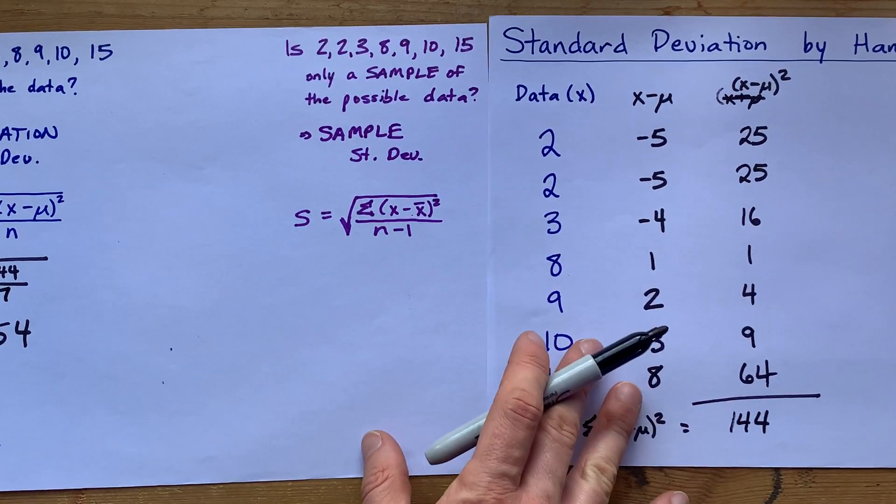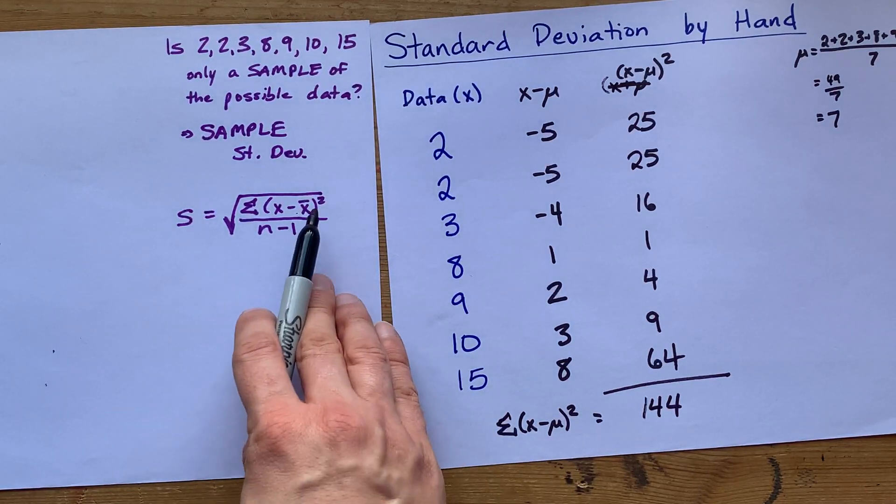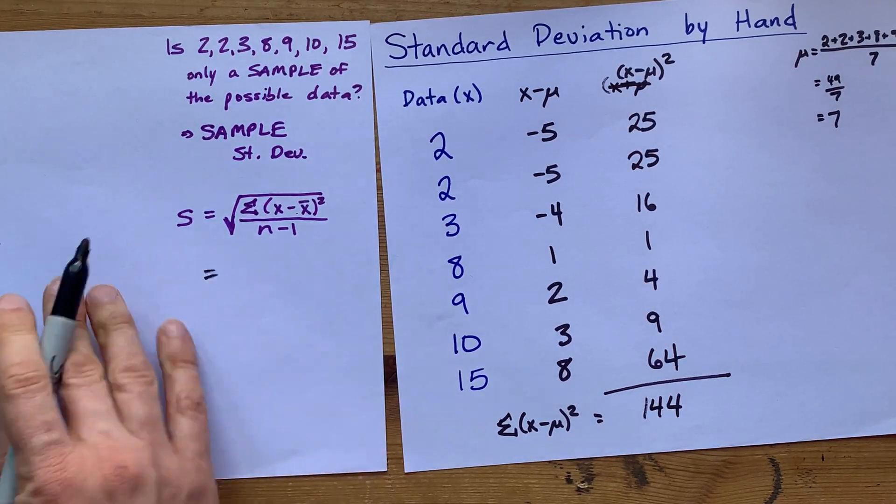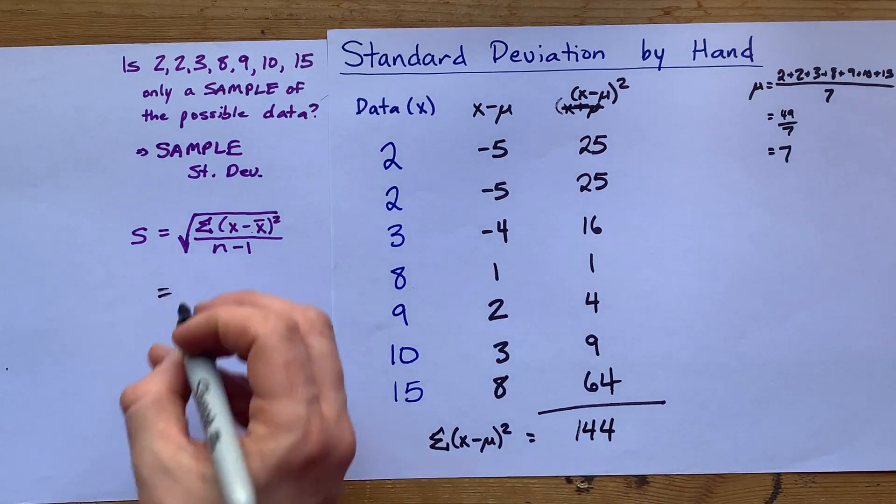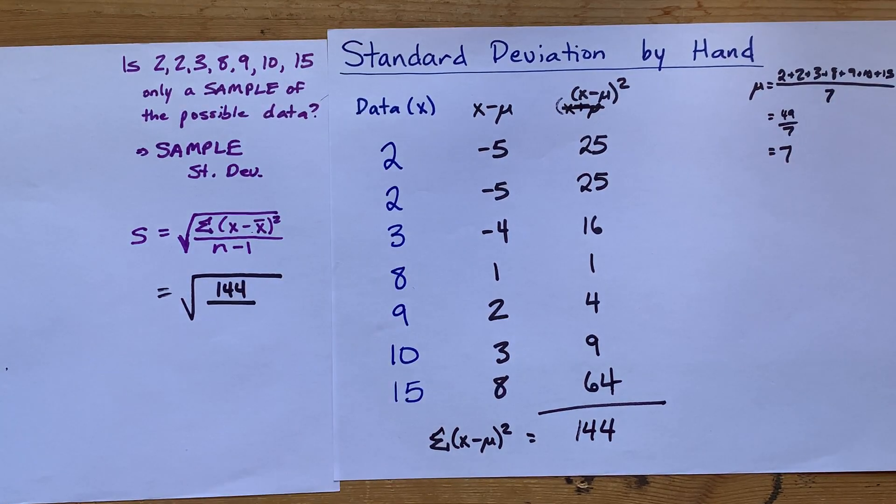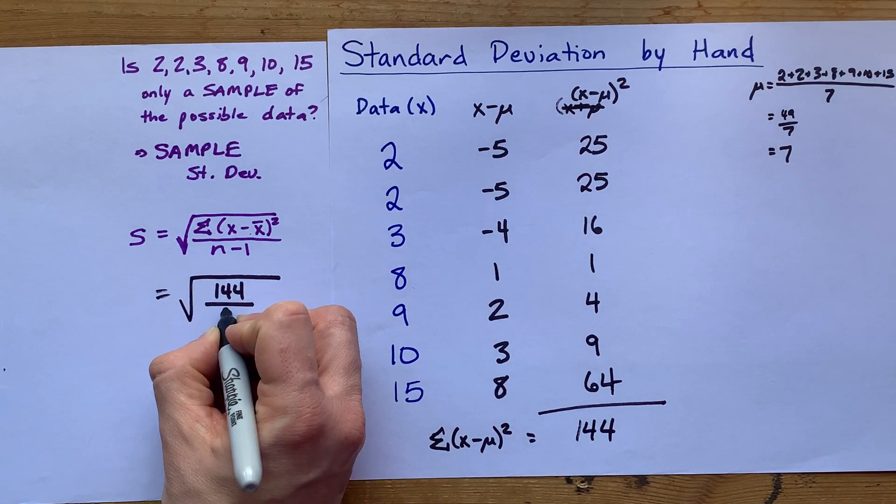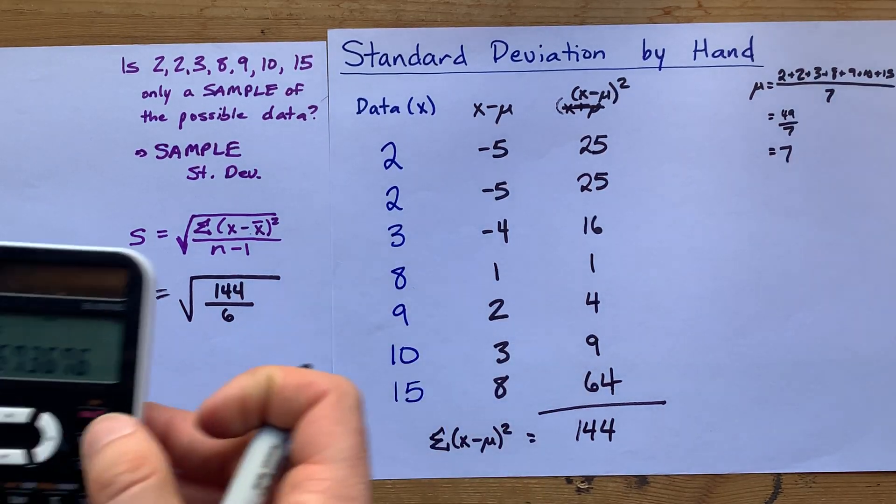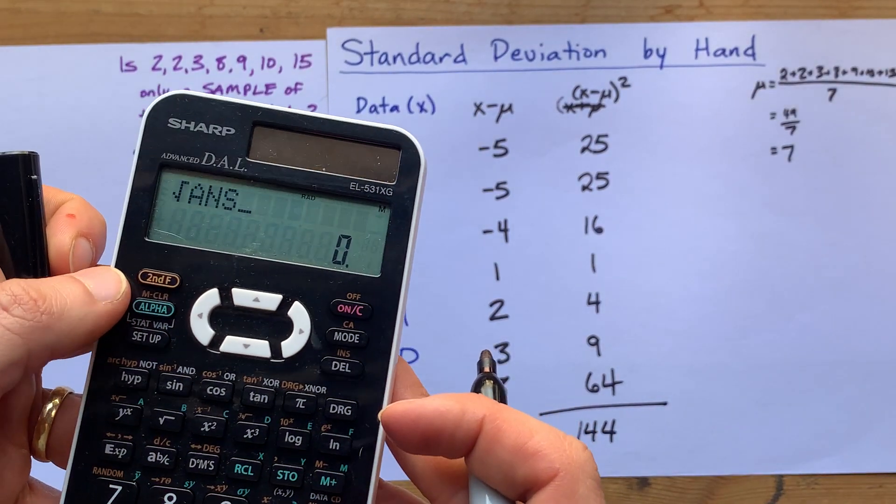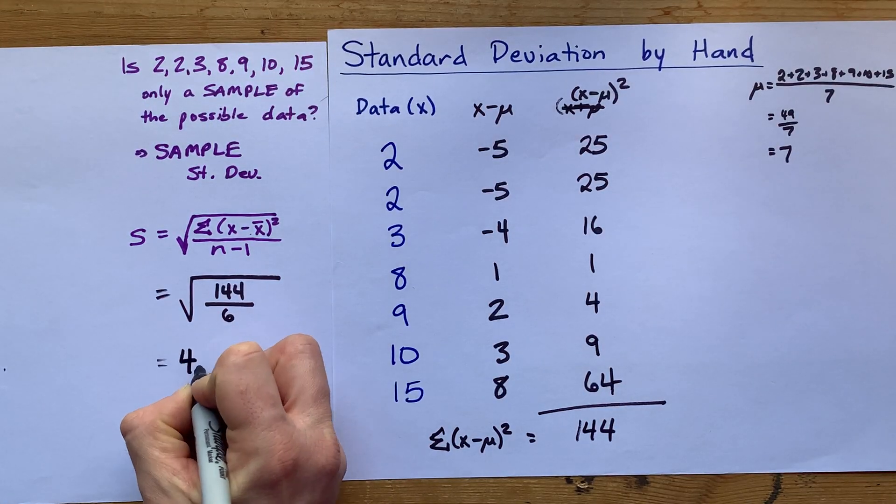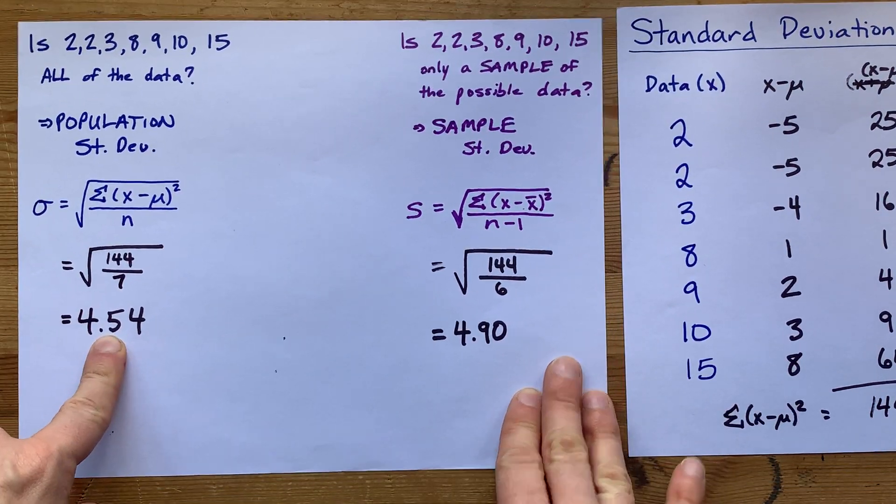If you were told that it's just a sample of the data, there's a slightly different formula. This x bar is the same as mu, but for a sample. And please note that the standard deviation here has a different symbol. Instead of it being sigma, it's just the letter S. Your teacher is probably going to be pedantic about that. But the formula is similar. You still put the 144 on top. The only other trick is that instead of it being n here, it's n minus 1. So 7 data points, you're going to divide by 6, one less than that. 144 divided by 6 is 24, and the square root of that is 4.90 if you round it to two decimal places. Cool. Well, there's your standard deviation if this was a sample, and there's your standard deviation if this was a population.